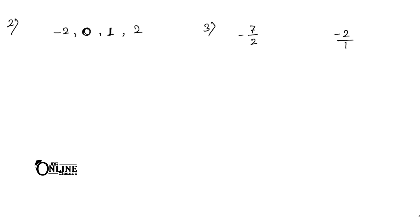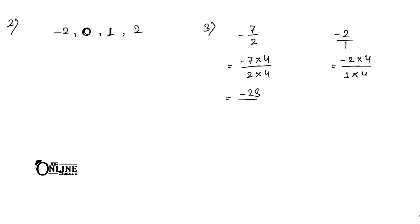Sum number 3: find three rational numbers between -7/2 and -2. You need to find three rational numbers, so first multiply the numerator and denominator of each by 4. If you wanted four rational numbers, you would multiply by 5. That gives -28/8 for the first one, and -2 becomes -8/4.